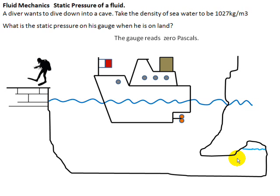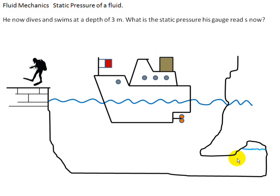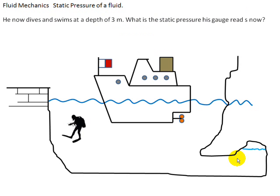Let us consider a diver who wishes to dive into a cave. How much will his depth pressure gauge read when he is on land? Zero, of course. Many pressure gauges read zero pressure in the atmosphere.